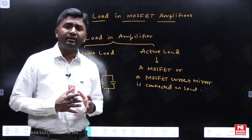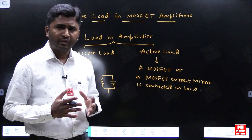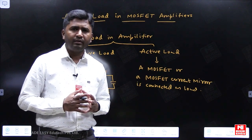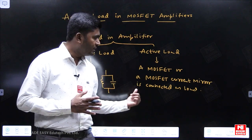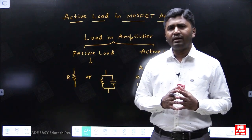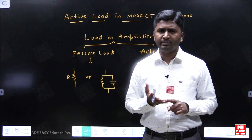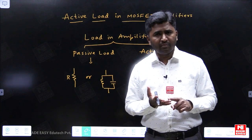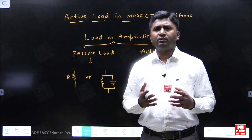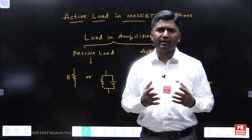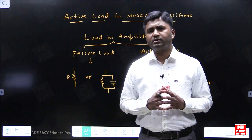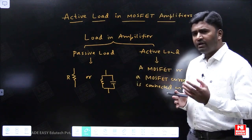This concept of active load is used mainly in integrated circuits. When we make amplifiers in ICs, we use active loads because they require less chip area. Another benefit is that if we use a MOSFET current mirror as a load, we can achieve a high voltage gain. Active loads also operate with smaller supply voltages.